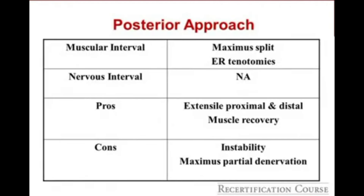The posterior approach remains the most common approach to total hip arthroplasty. It involves a gluteus maximus split and external rotator tenotomies from the back of the femur. There is no internervous interval. The advantage is that it's quite extensile both proximally and distally, and recovery can be quite quick. The downside, historically, is instability. That may be changing with larger femoral heads, but for the purposes of the test, a posterior approach should be associated with instability.